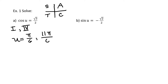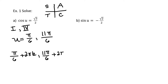Remember that the trig functions are periodic — these values repeat every one of their periods. The period of cosine is 2π. So we write u = π/6 + 2πk, and similarly u = 11π/6 + 2πk, where k is an integer.